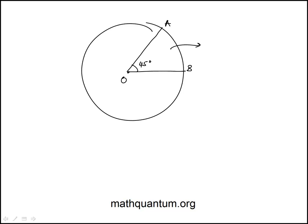We're told that if the area of the shaded sector is 18 pi, what is the radius?